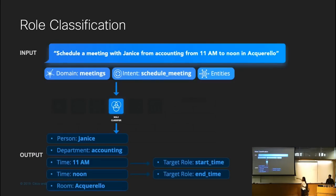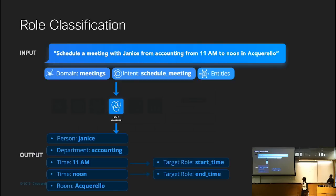Back to our example: in the scheduled meeting query, the time entities of 11 AM and noon can then be assigned the roles of start time and end time.